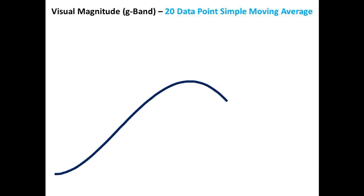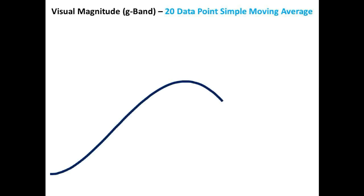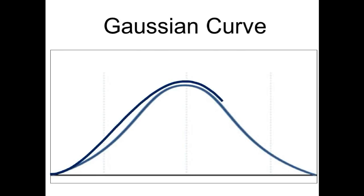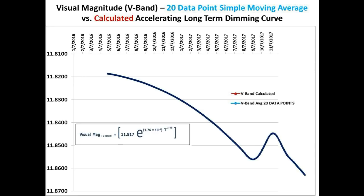If we superimpose a classic shaped Gaussian curve for comparison, you can see an almost identical fit between the two. We will go out on a limb and say that the flux of Tabby Star will complete the right half of the Gaussian curve and then continue with its century-long term dimming, similar to this curve.